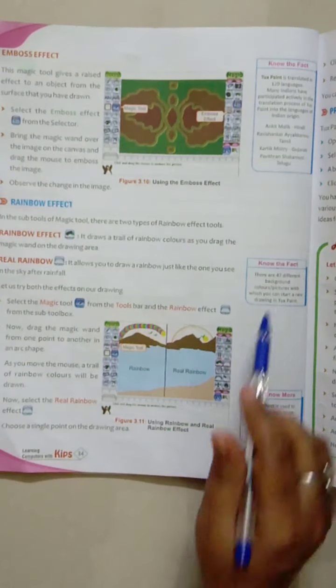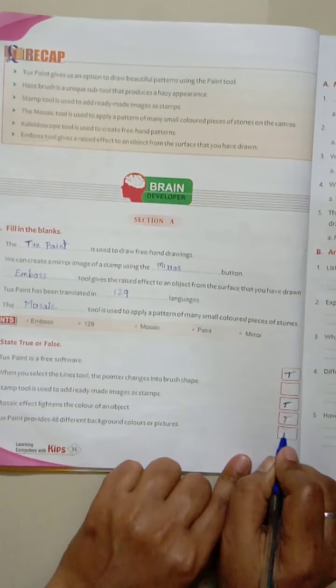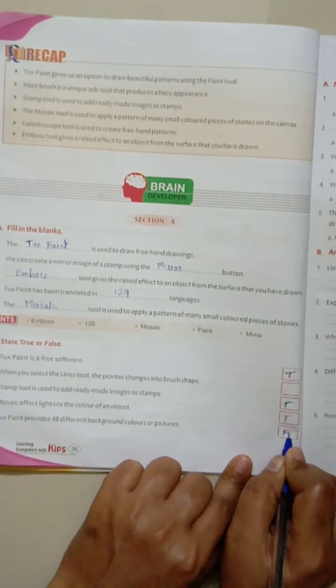How many are there? 47 are there. Here they have provided 48, so the given statement is false. I will mark it.